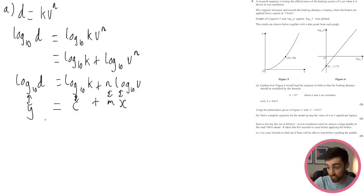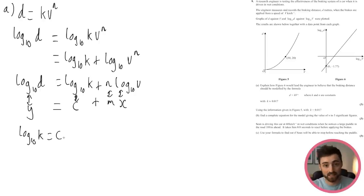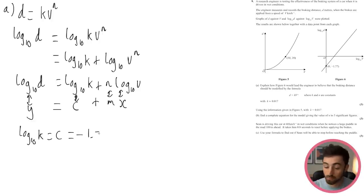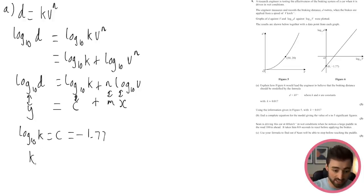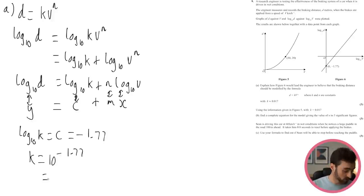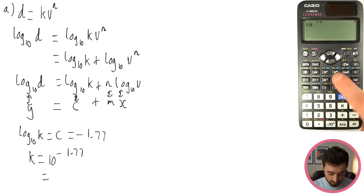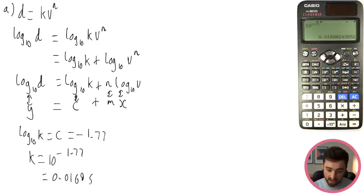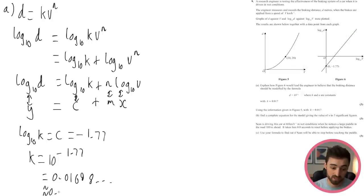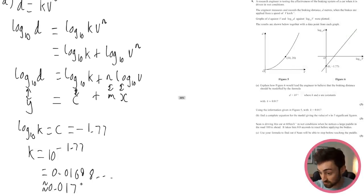So log₁₀(k) = −1.77, meaning k = 10^(−1.77). Calculating: 10^(−1.77) ≈ 0.01698, which is approximately 0.017, confirming the given value.